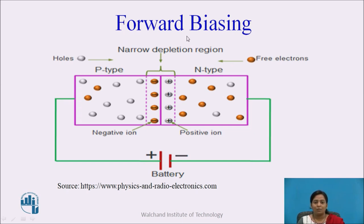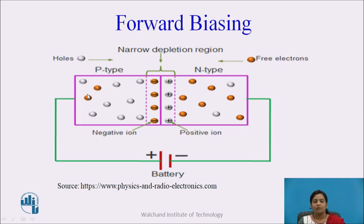In forward biasing mode, the positive terminal of the external DC source is connected to the P-side and the negative terminal is connected to the N-type semiconductor. The electrons from N-side are repelled towards the junction due to the negative terminal, and the holes — which are positively charged — are repelled towards the junction due to the positive terminal. Due to this movement of electrons and holes towards the junction, the width of the depletion region decreases.